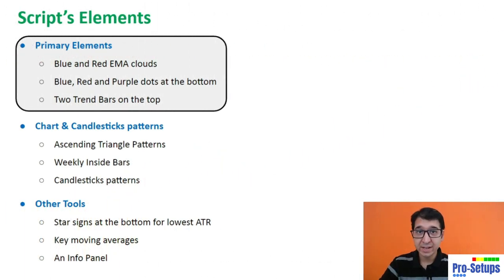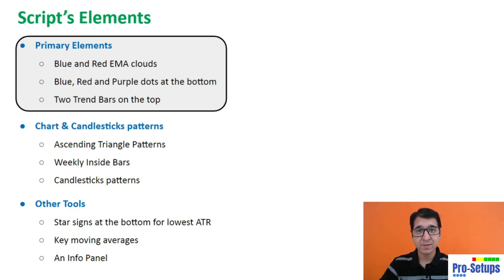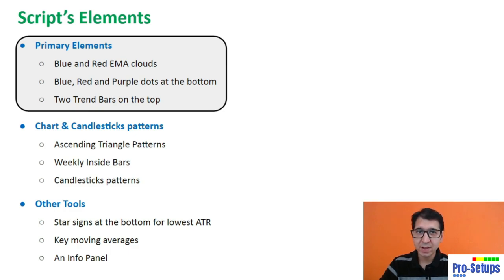Till here, I have told you about the primary elements of the script, which are the blue and red EMA clouds, the blue, red and purple dots which appear at the bottom of the chart, and two trend bars which come on the top of the chart. The other tools of the script — charts and candlestick patterns and other tools like an info panel and key moving averages — assist a trader in taking a trade.